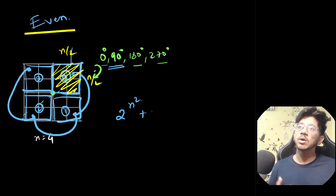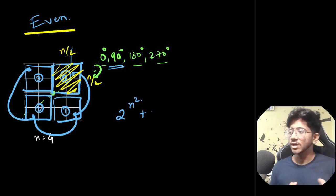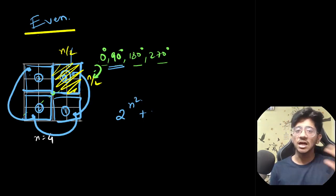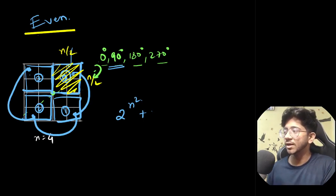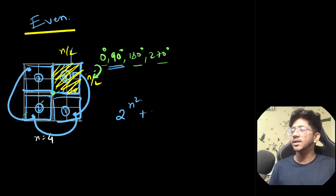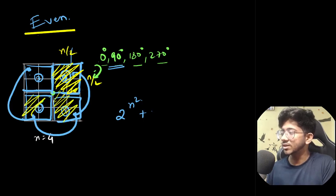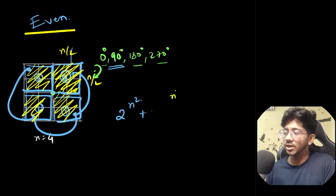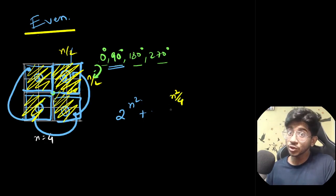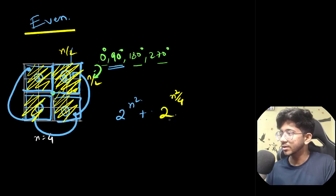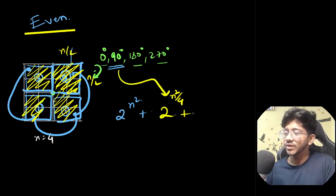This zero-frame — the top-left n/2 × n/2 block — contains n²/4 independent cells. If you color just this block, rotating by 90° fills in the rest of the board automatically. So the number of fixed colorings under 90° rotation is 2^(n²/4). The same reasoning applies to 270° rotation, giving another 2^(n²/4) term.